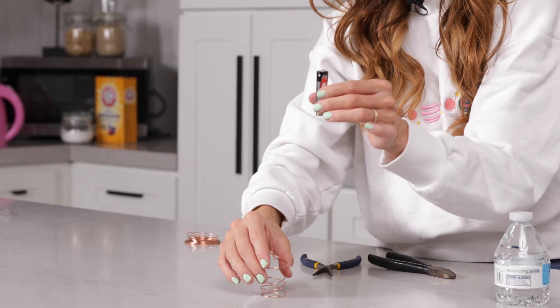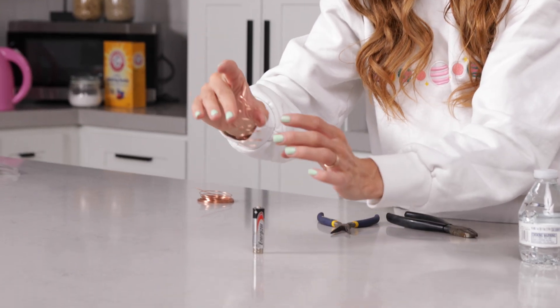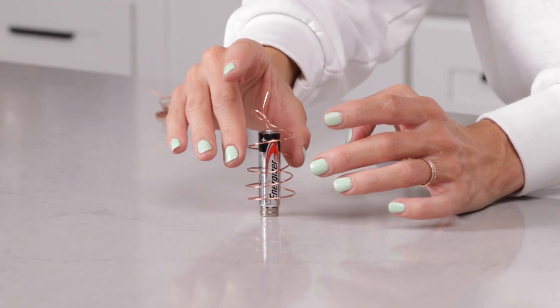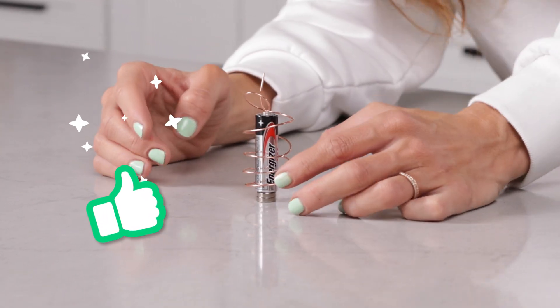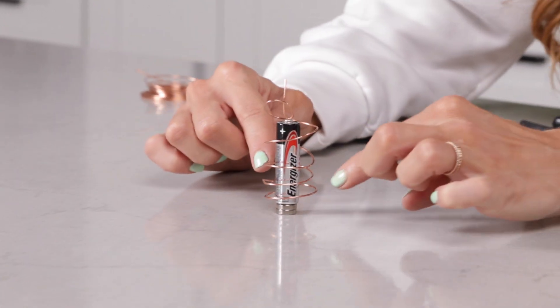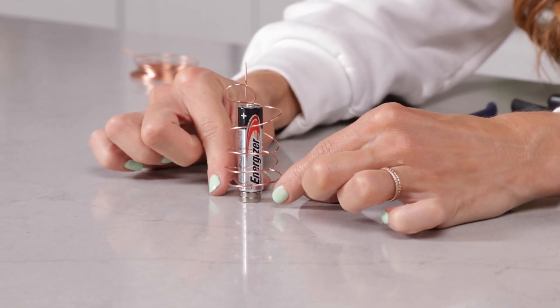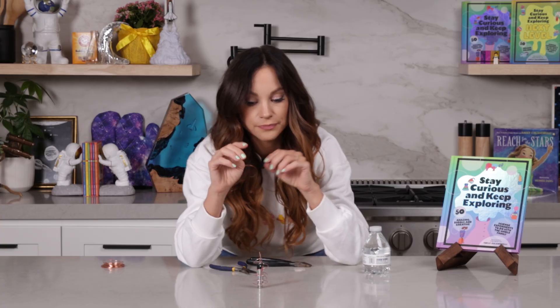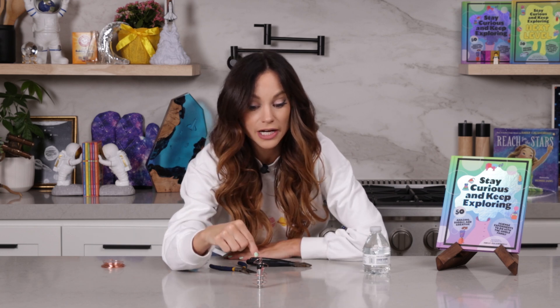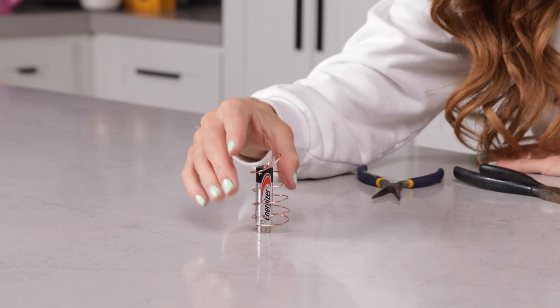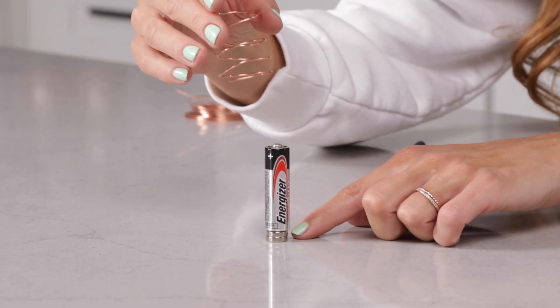So once you have this set up, place your wire structure right on top. We're going to see if it'll balance there. That looks pretty good. So I'm going to stretch my wire structure down. Here's why.